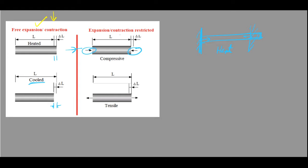Compressive stress is generated when the bar is heated and its expansion is restricted. Similarly, if a bar is fixed from the ends and it is cooled, it tries to reduce its length but it is fixed, so it is pulled by the fixed supports and tensile stress develops. So: when the body is heated it is under compressive loading; when the body is cooled it is under tensile loading. Remember, this is only the case when expansion or contraction is restricted — if the body is free, thermal stress will be zero.